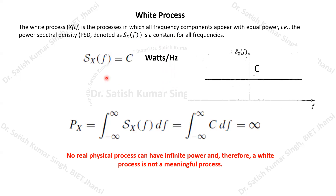When a random process is a white process, all frequency components have the same power in the PSD curve. This is constant from zero to infinity. It is called 'white' because it is analogous to white light, which contains all frequency components. Similarly, in communication system engineering, when a random process has a PSD that is constant over the entire frequency range, it is called a white process.